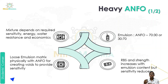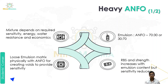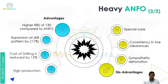The fourth key point is that relative bulk strength (RBS) increases with emulsion content, but sensitivity reduces accordingly. This is the detail of heavy ANFO. Now let's look at the advantages and disadvantages.